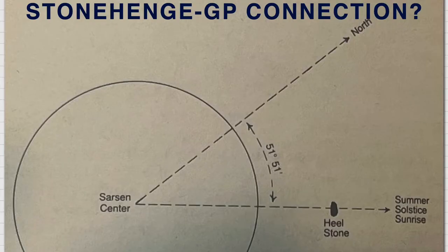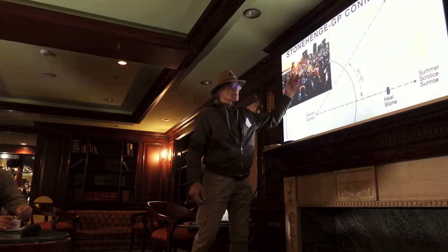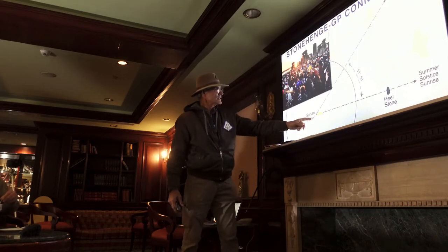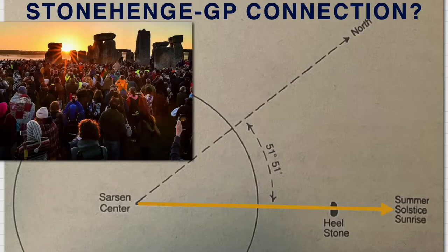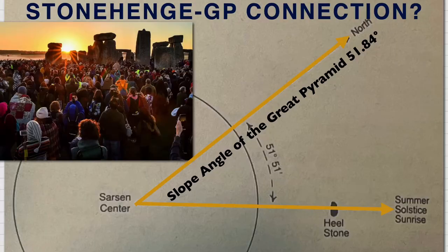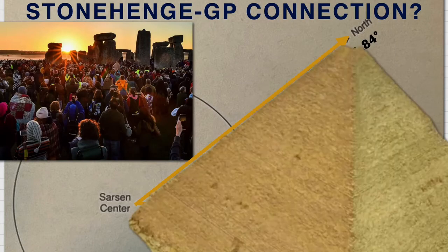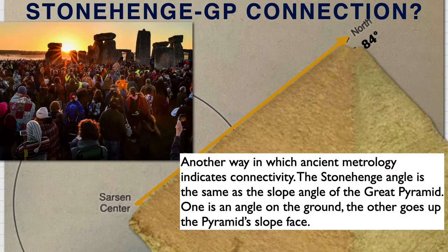This is a top view of Stonehenge. A lot of people gather here for the midsummer solstice — it's a famous pagan thing. They stand in the Sarsen Center and look through the Heelstone to watch the summer sunrise. If you take north from there — Junior asked me what direction the coffin was pointing today and it was 23 degrees — this just happens to be pointing at the exact slope angle of the Great Pyramid. Another way ancient metrology indicates connectivity: the Stonehenge angle is the same as the slope angle of the Great Pyramid. One is an angle on the ground; the other is an angle upward on the face of the Great Pyramid.